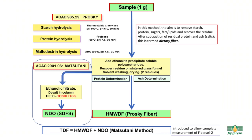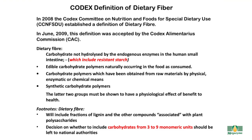This allows the quantitative measurement of all non-digestible carbohydrates in such products as Fibrosol II. In 2008, the Codex Committee on Nutrition and Foods for Special Dietary Use (CCNFSDU) established a definition of dietary fibre. In June 2009, this definition was accepted by the Codex Alimentarius Commission. The key aspect of this definition is that it included resistant starch and gave national authorities the option to decide whether to include carbohydrates of DP3 to 9 — in other words, the SDFS fraction.